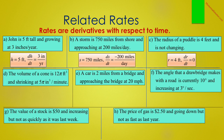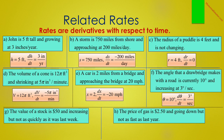It is negative because it is approaching and therefore getting smaller. In C, the radius of a puddle is 4 feet and is not changing, so R is 4 feet and DR/dt equals 0. In D, the volume of a cone is 12π cubic feet and shrinking at 5π cubic inches per minute. Therefore V equals 12π cubic feet, and DV/dt equals negative 5π cubic inches per minute — negative because the volume is shrinking. In E, a car is 2 miles from a bridge and approaching at 20 miles per hour. X is 2 and DX/dt equals negative 20 miles per hour, because the distance from the car to the bridge is getting smaller.